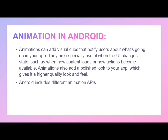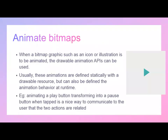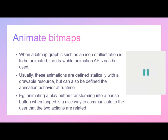Let's see the different types of animation available in Android. First, animate bitmaps: when a bitmap graphic such as an icon or illustration is to be animated, the drawable animation APIs can be used. Usually these animations are defined statically with drawable resources, but they can also be defined at runtime. For example, a play button transforming into a pause button when tapped is a nice way to communicate to the user that the two actions are related to one another.